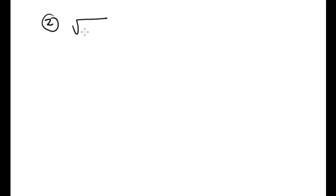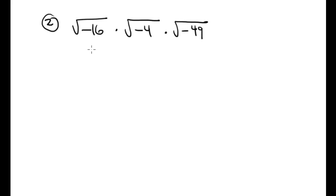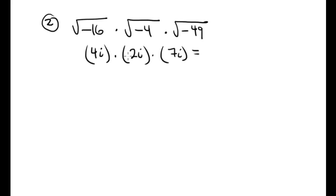Number two is square root of negative 16, times square root of negative 4, times square root of negative 49. This gives 4i times 2i times 7i. Multiplying the numbers: 4 times 2 is 8, times 7 is 56, giving 56i cubed. Since i cubed is negative i, the final answer is negative 56i.